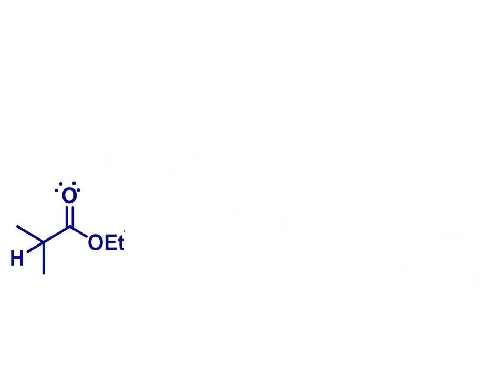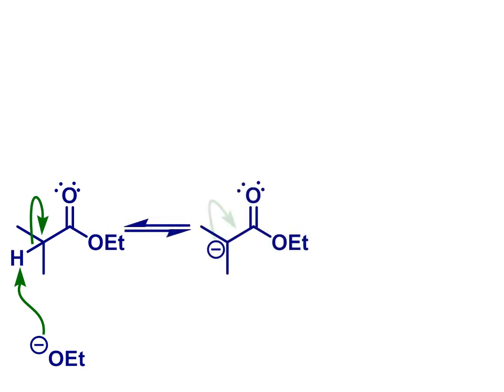Also note that it's not just ketones and aldehydes that can form enols or enolates. Other carbonyl compounds can do this too, including esters, as shown here. Deprotonation alpha to the carbonyl group, as previously, generates a carbanion form, which we can consider being stabilized by resonance up onto that oxygen.